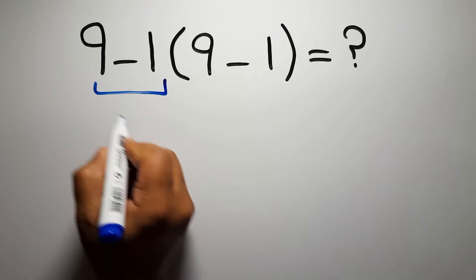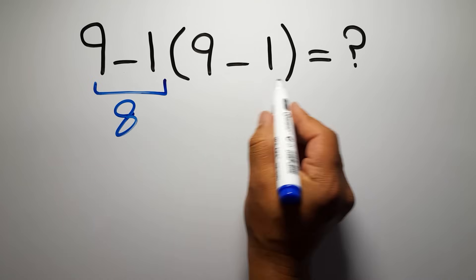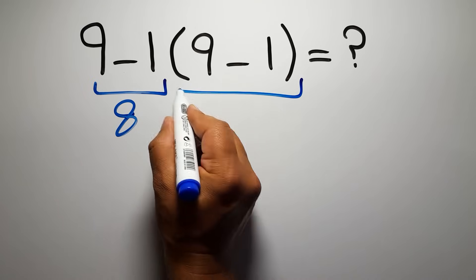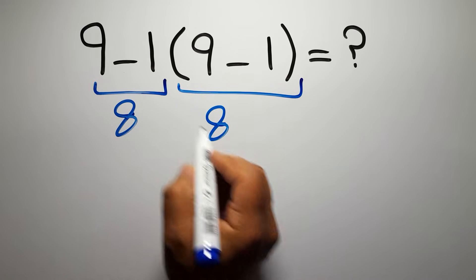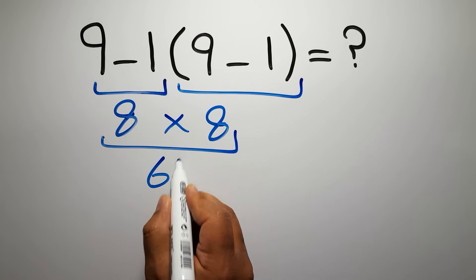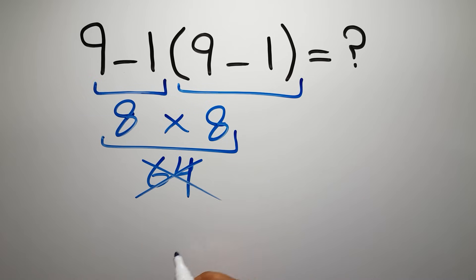9 minus 1 gives us 8, and again here we have 9 minus 1, so 8 times 8 is just 64, but this answer is not correct.